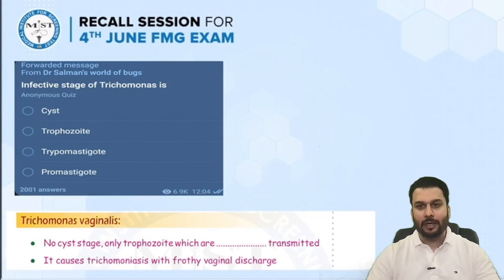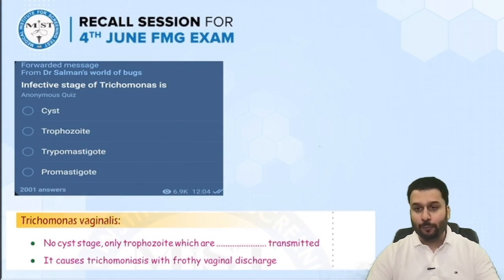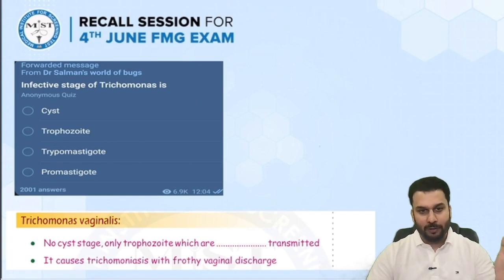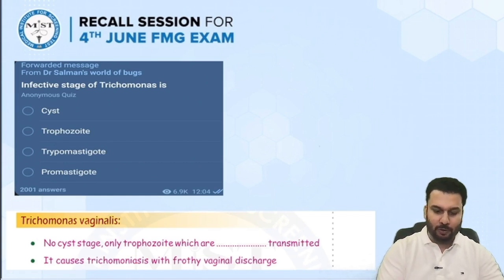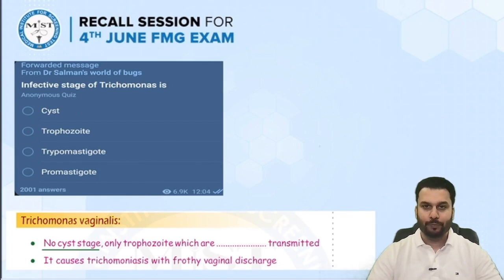This was also a question I put in my Telegram group. The infective stage of trichomonas is the trophozoite, because the cyst is absent in that organism. From the notes you can see the first line states there is no cyst stage — only trophozoites exist, which are sexually transmitted.